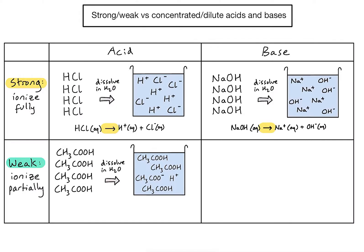Because we've effectively got two processes happening — first the ionisation, and then the opposite process where those ions become molecules again — if we represent this as a chemical equation, you'll notice that we use a two-sided or reversible arrow. Because this process is happening in both directions, at any given time there will only be a small number of those molecules that have dissociated or ionised.